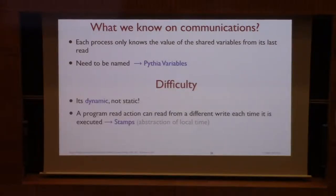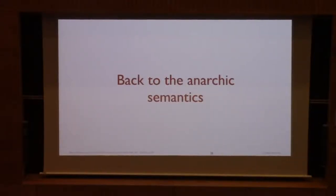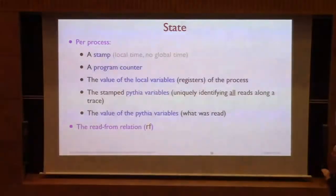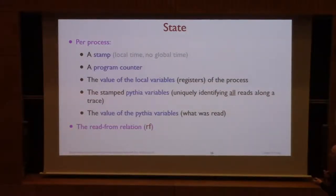And you know with Lamport, the names of shared variables designate the current value of the variable in the memory. But in the weak memory model there is no notion of the current value of a shared variable. So what do we know in this model? We know that each process knows the value that it has read. And so we need a name for the value that you have read because you want to speak about them. And we call them PCR variables. But there is a difficulty is that it is dynamic. It's not static because you don't read always from the same write. So we need a notion of local time. And we use stamps for that.